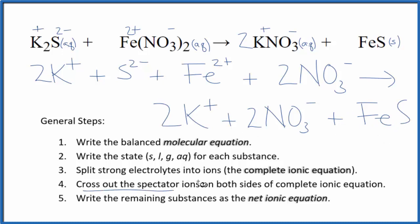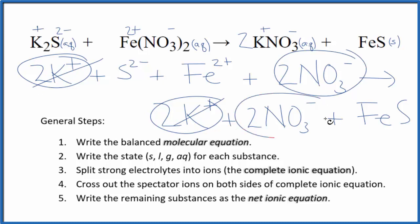Now we get to cross out spectator ions. They're on both sides. They haven't changed so we're really not interested in them. Products and reactants. I see in the products I have two potassium ions and in the reactants. I see I have two nitrate ions here in the reactants, two in the products. What's left, that's the net ionic equation for K2S plus Fe(NO3)2.